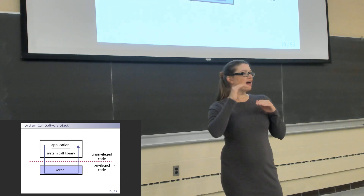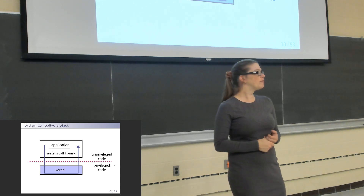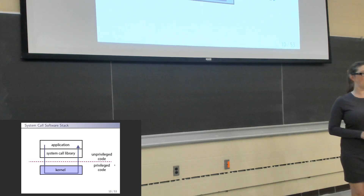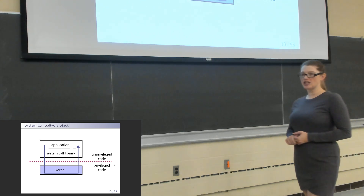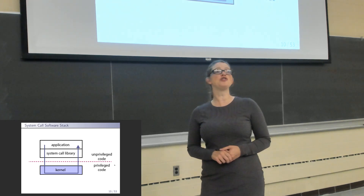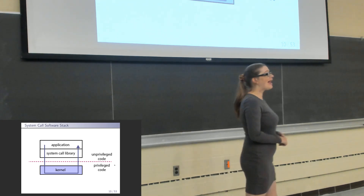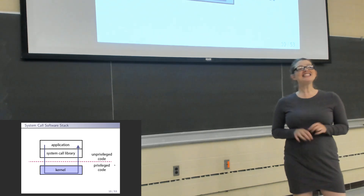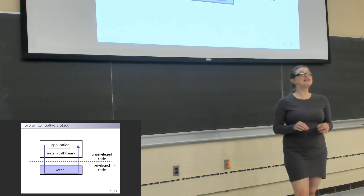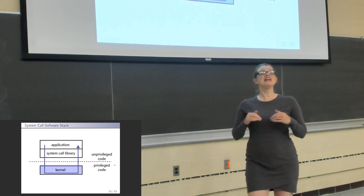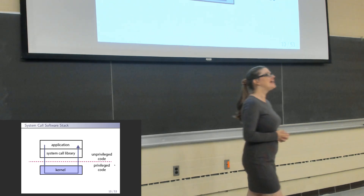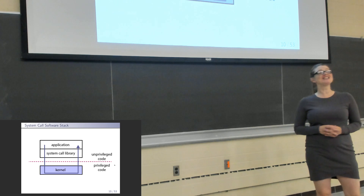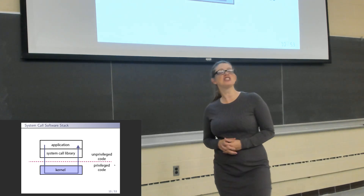There's a dashed line separating the system call library and application from the kernel — that's the concept of modes of privilege. User applications are unprivileged code. Unprivileged code should not be allowed to do things like halt the CPU without permission or directly alter the CPU voltage. When user application code is executing, we are in unprivileged mode on the CPU. If while in unprivileged mode a user program tries to execute a privileged instruction, the CPU will throw an exception to stop it. When we're in kernel land executing with privileged mode, we can do anything we want.